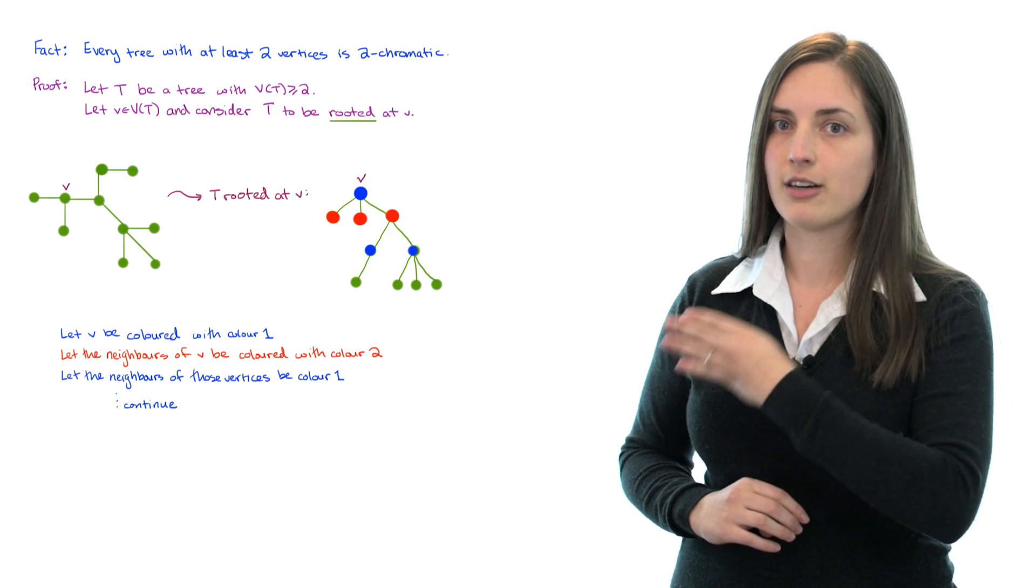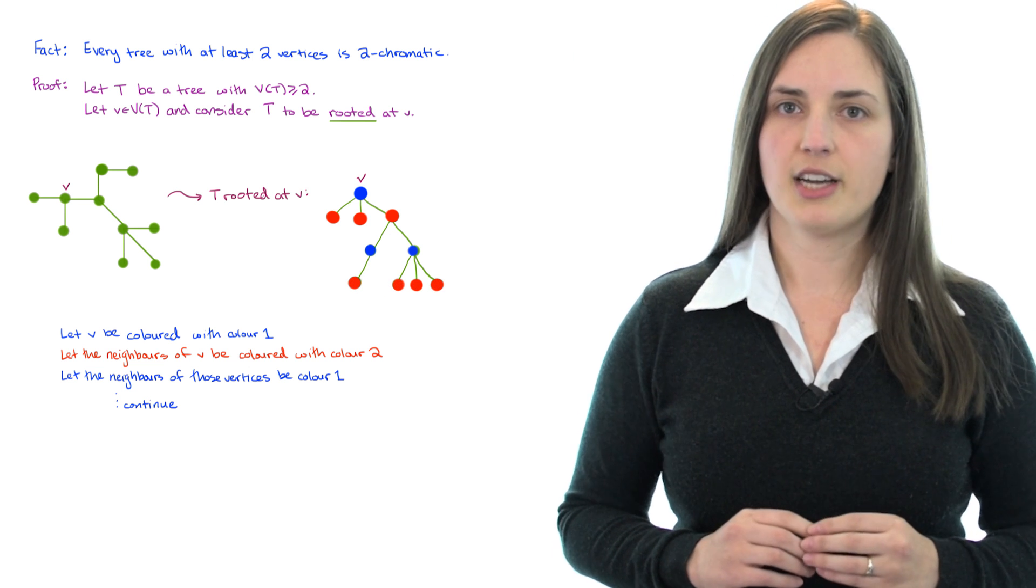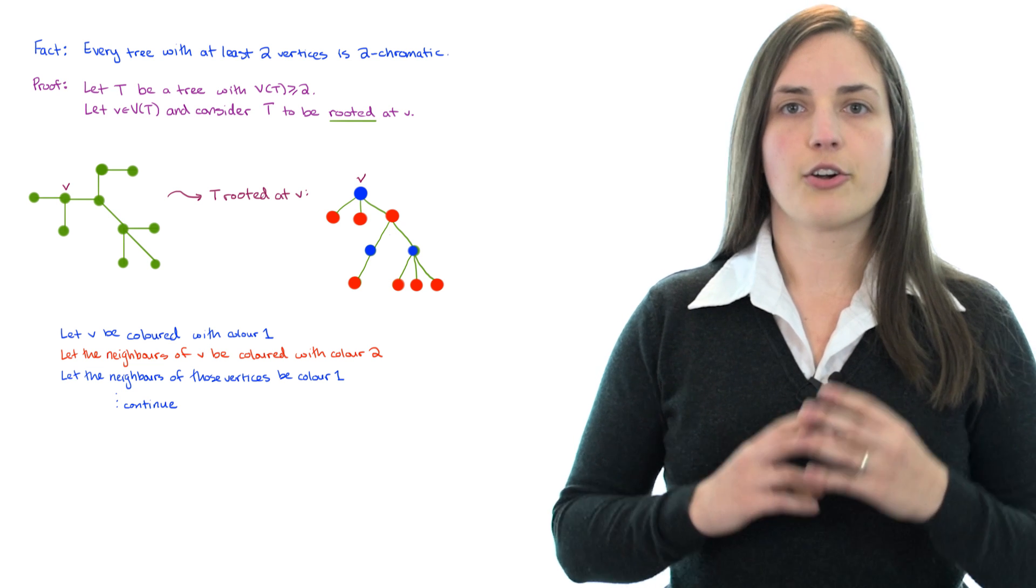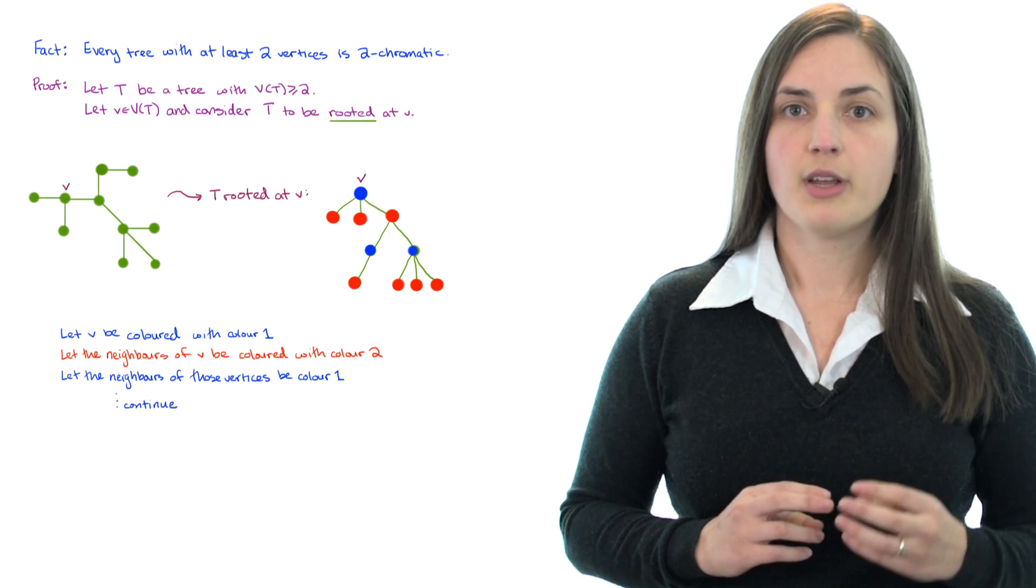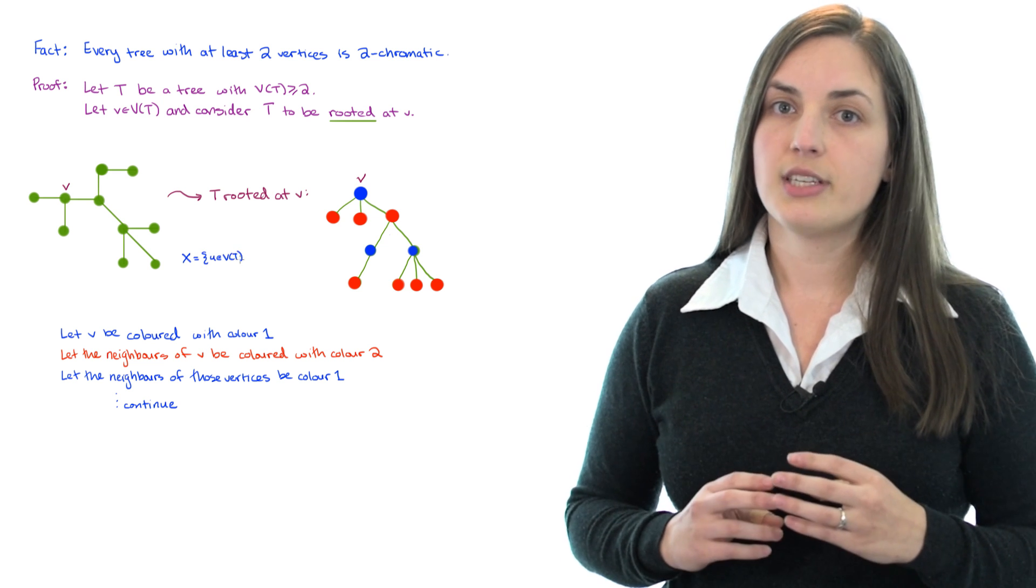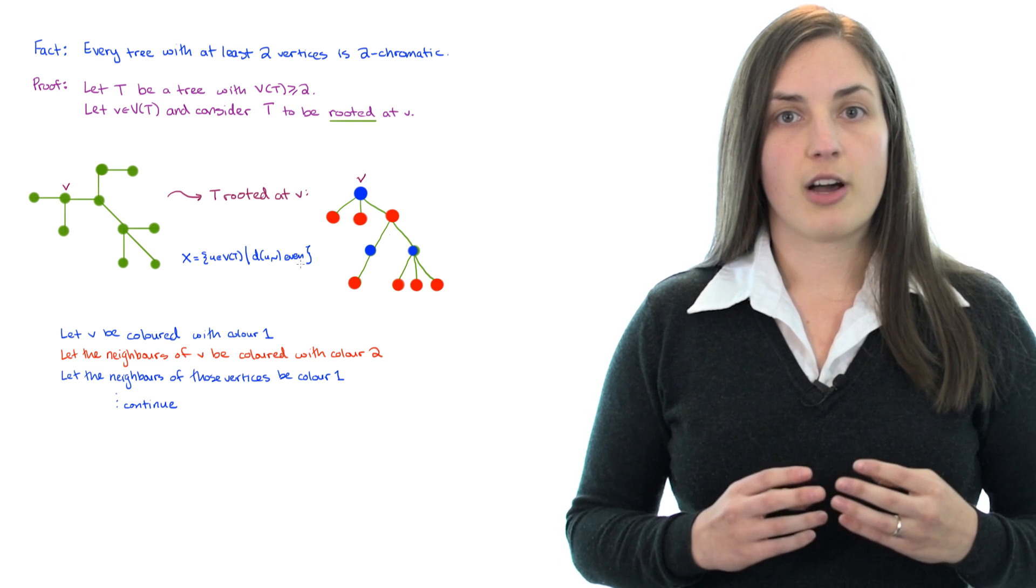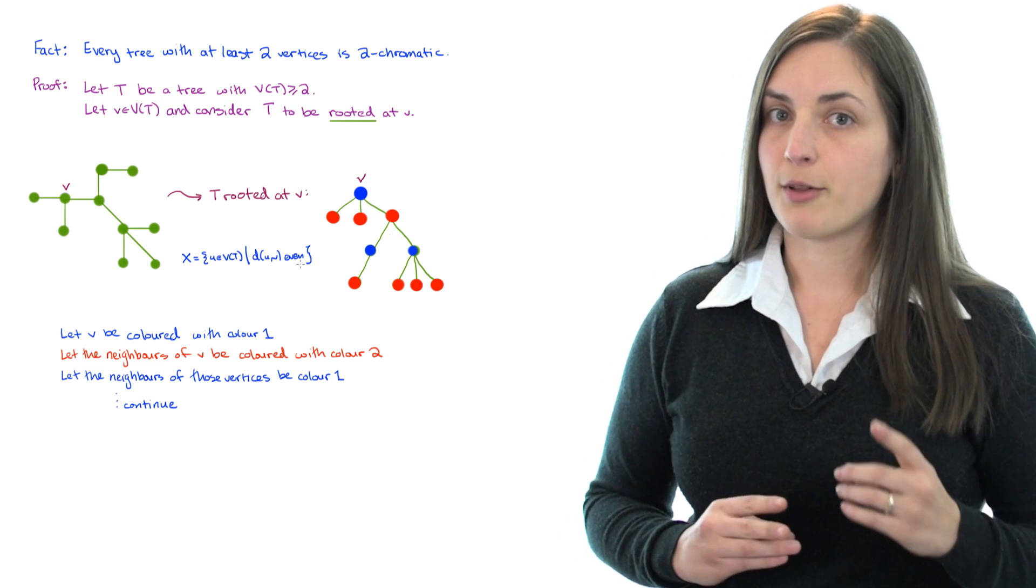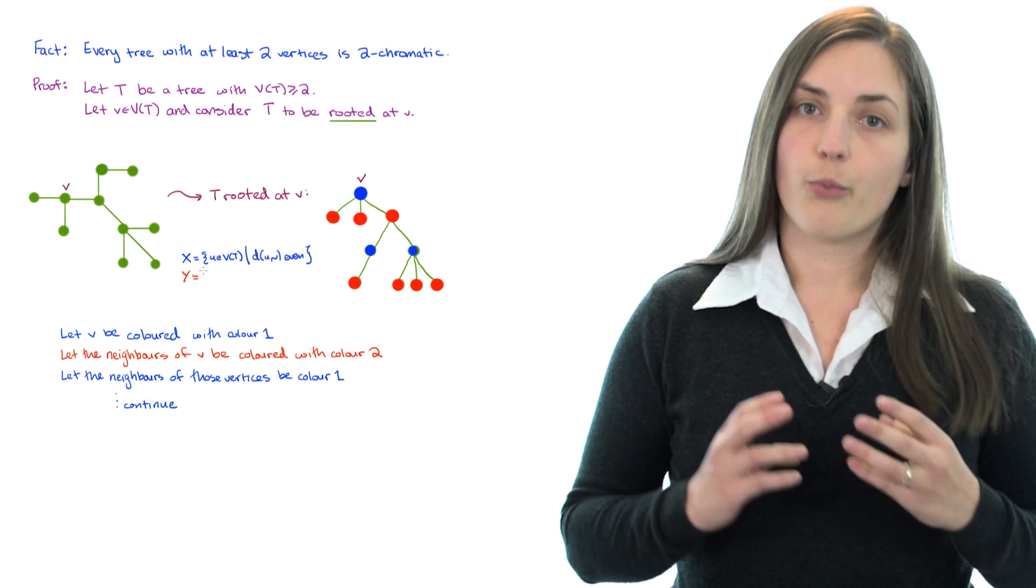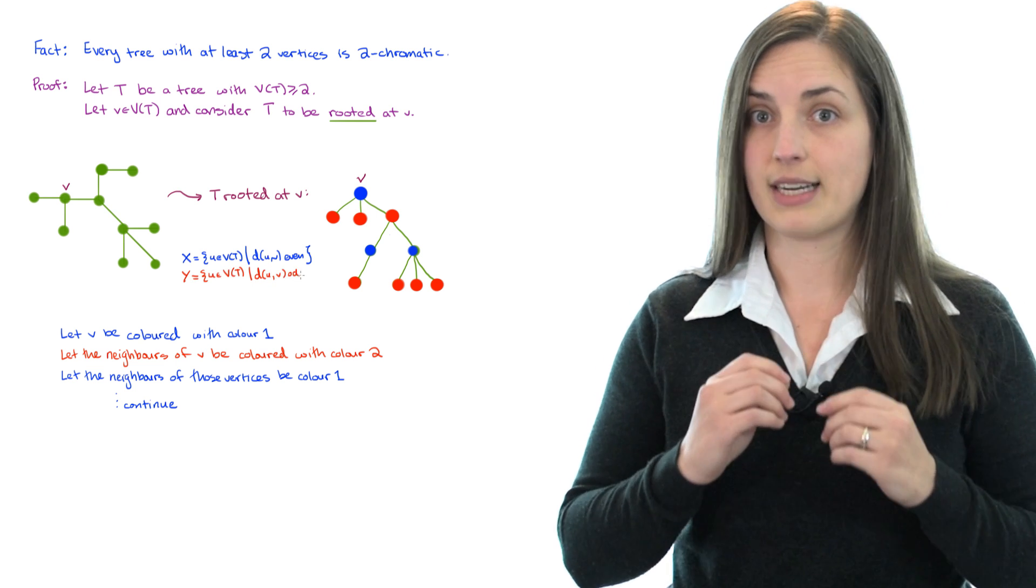Now I've layered this tree so that it's colored blue, red, blue, red. I've really colored all of the vertices blue that belong to the set X, where X is the set of vertices whose distance from V is even. And we've colored all of the vertices red that belong to the set Y, where Y is the set of vertices of the tree whose distance from our special vertex V is odd.